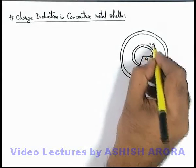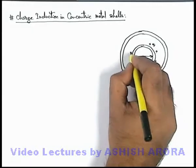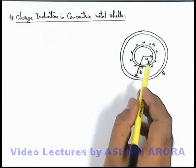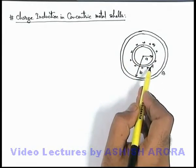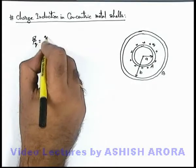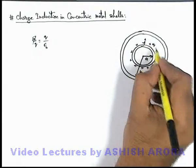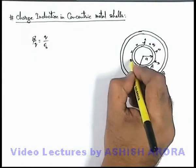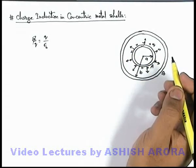Say only a charge +Q is given to the inner shell and no other charge is given anywhere else. In this situation, due to mutual repulsion, this charge will spread on the outer surface of shell A, and it will originate a total flux of Q/ε₀. This flux will be originated outward, and we know that electric lines can never penetrate a metal surface because inside a metal the electric field is always zero.